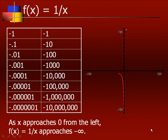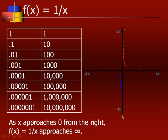If we plug in x = -1, we get -1. If we plug in x = -0.1, we get -10. All the way up to x = -0.00001, we get -10 million. As these x values get closer to zero, the y values go off to negative infinity very rapidly. As x approaches zero from the left, 1 over x approaches negative infinity — meaning as the x's get closer to zero, the y values get further from zero.